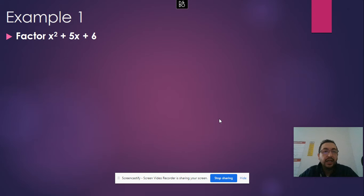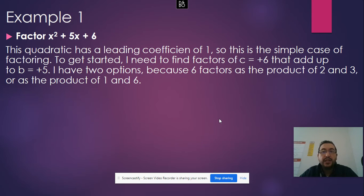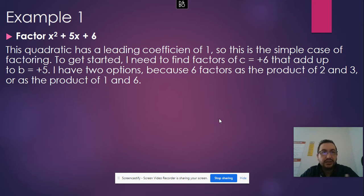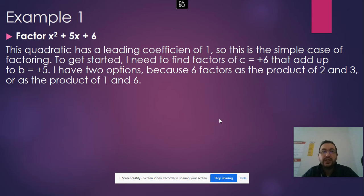Let's see this example: x squared plus 5x plus 6. We need to find two numbers where a times c equals 6 — since 1 times 6 is 6 — and when we add them, they give us b, which is 5. So we're looking for two numbers that multiply to give 6 and add to give 5.